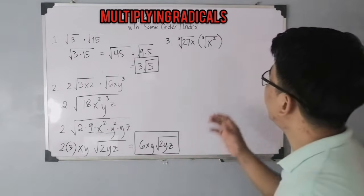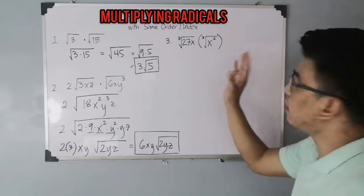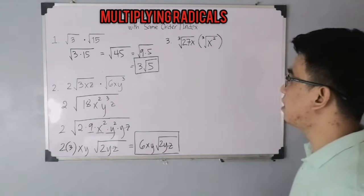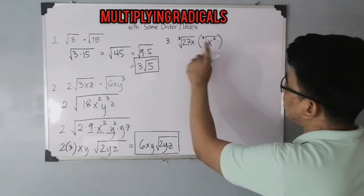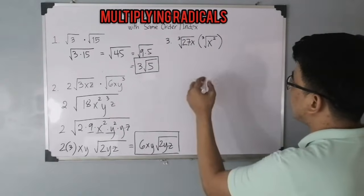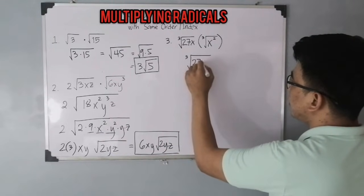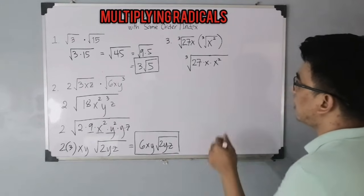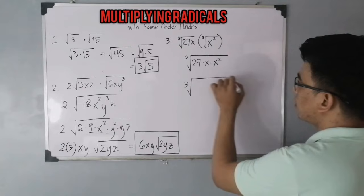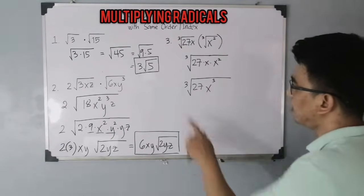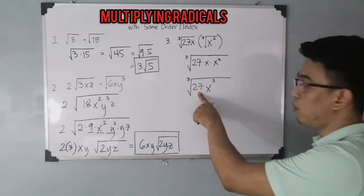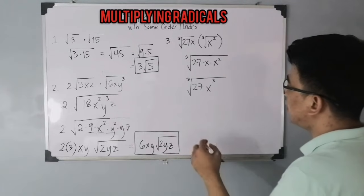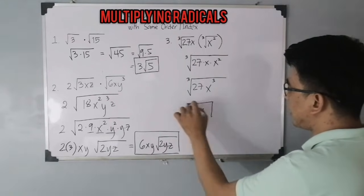Now let's move on with item number 3. We have the cube root of 27x times the cube root of x squared. Since they have the same index, copy the radical sign. You have the cube root of 27 times x times x squared. Multiplying the radicands gives the cube root of 27x³. Since 27 is a perfect cube and x cubed is a perfect cube, the simplified form is 3x.